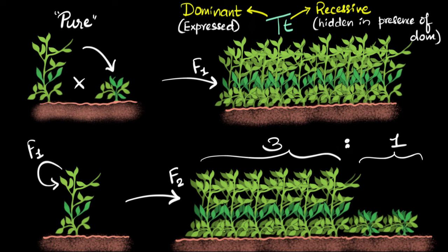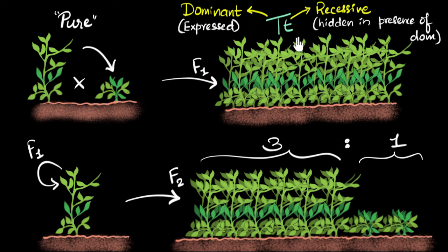At this point, you might have questions about why the tall trait is dominant and not the short trait. Mendel is just trying to guess what might be happening — we don't yet know what makes a trait dominant. Later, when we study genes, DNA, and how traits are passed, we'll get clues about why certain traits become dominant and others become recessive. But for now, let's not worry about why one of them is dominant.